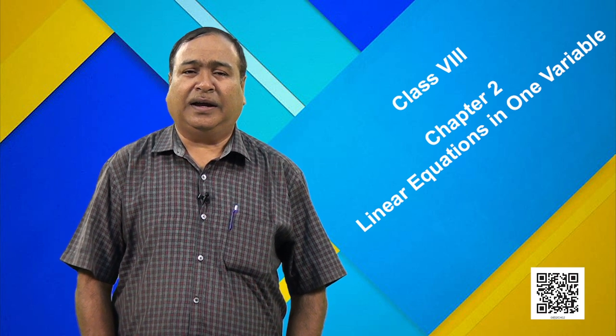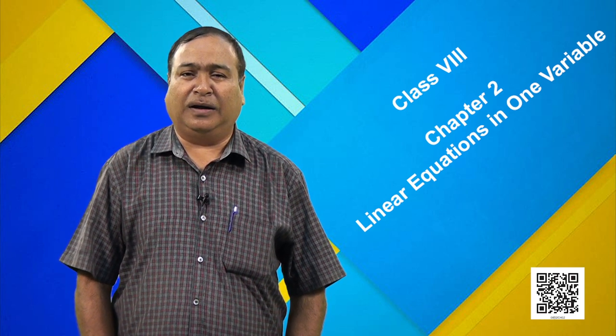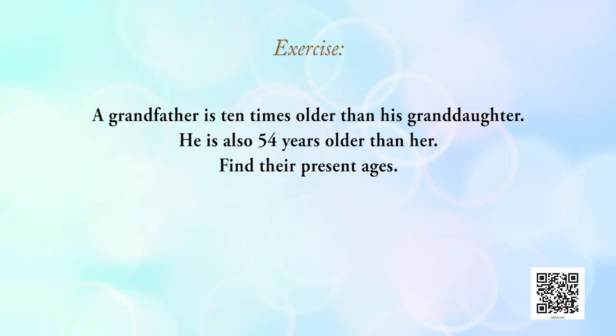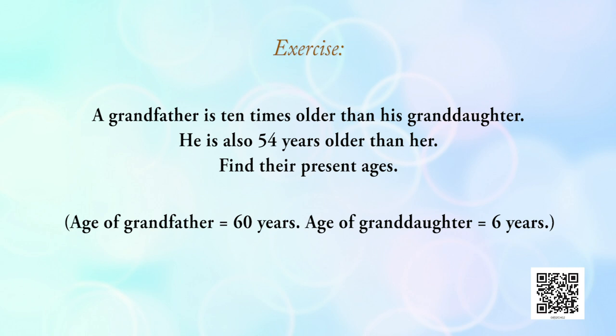Similarly, try and solve the following problem as an exercise. A grandfather is 10 times older than his granddaughter. He is also 54 years older than her. Find their present ages. For your reference, the answers are: grandfather's age is 60 years and granddaughter's age is 6 years. Apply the above method to find these values.